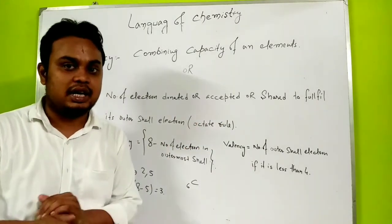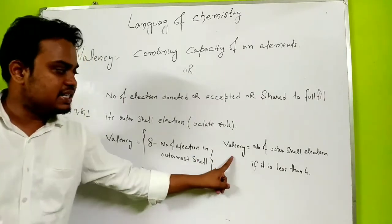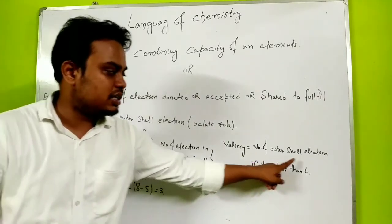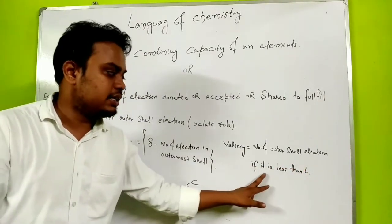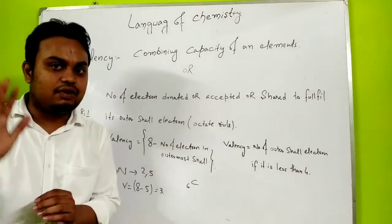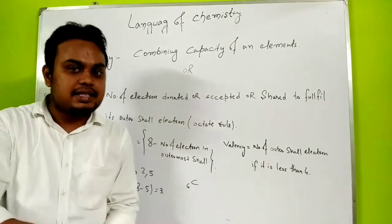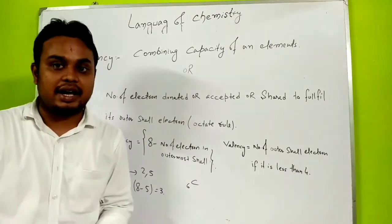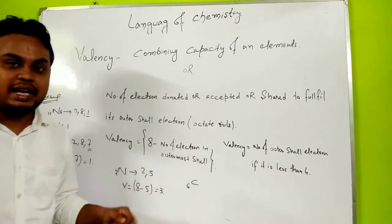We find out how to determine valency. Valency is the number of outer shell electrons. If it is less than 4 electrons, then that number is the valency.